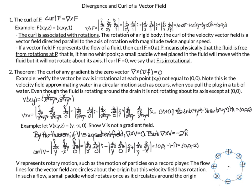Curl is associated with rotations. You can think of this paddle wheel going around a circle — if the paddle wheel itself rotates, as we go around you can see that the arrows rotate. So the paddle wheel is circling as well until finally the arrow is no longer pointing up, it's pointing down, pointing west, and then it comes around. If a vector field represents the flow of a fluid, then curl equals 0 at a point p means physically that the fluid is free from rotations at that point — in other words, it has no whirlpools.